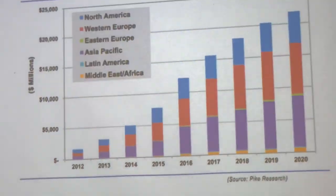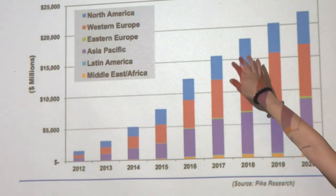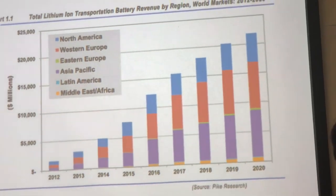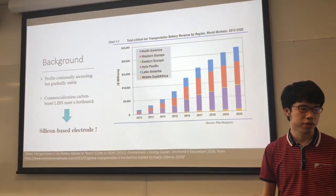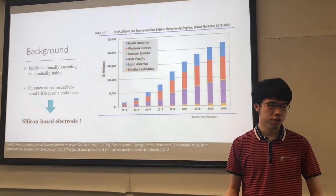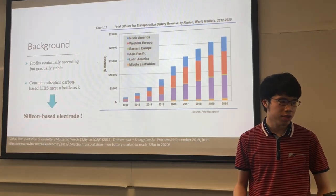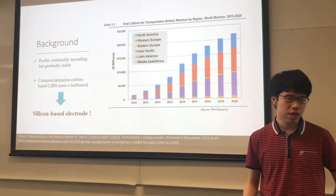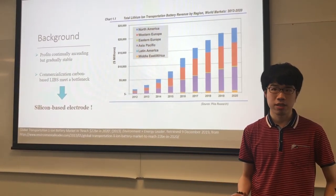However, as you can see on the figure, the trend has become more stable in recent years, meaning the traditional lithium battery has hit a bottleneck. Although conventional carbon-based electrodes have good stability and low manufacturing cost, their small capacity and limited lithiation kinetics have limited further development.